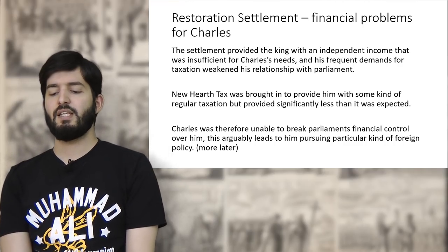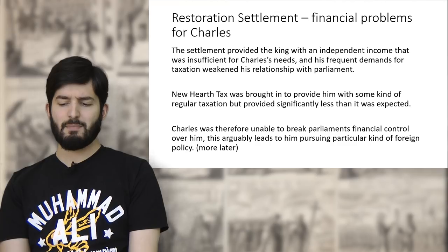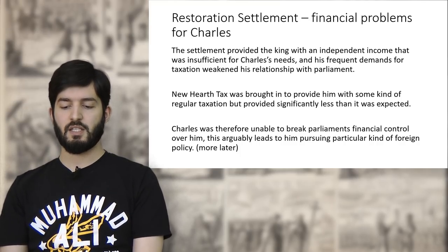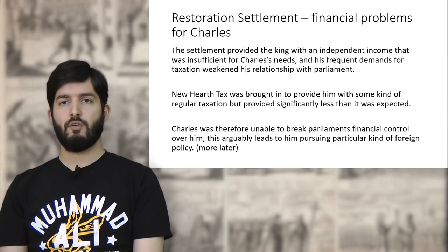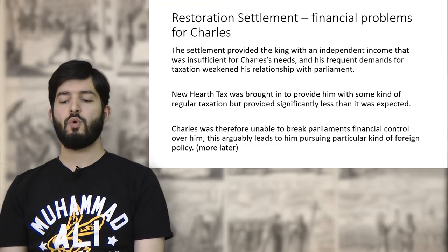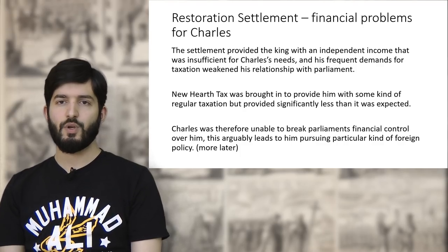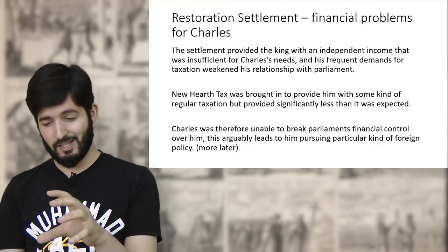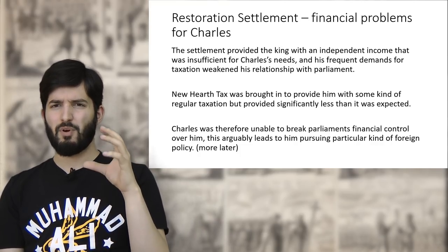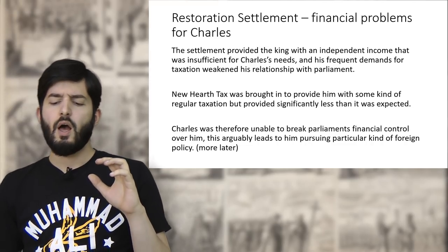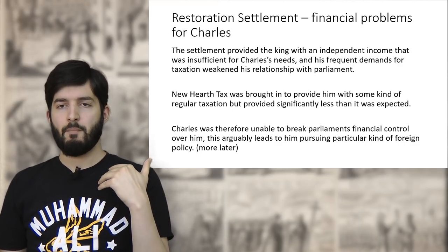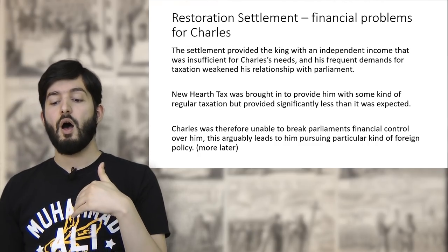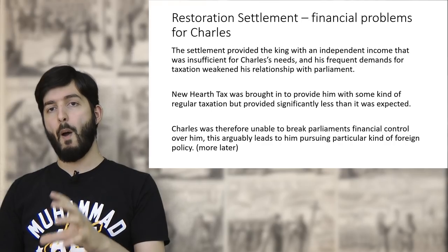The final issue with the Restoration Settlement is the financial problems it creates. The settlement provides the king with an independent income, but the income was not sufficient for Charles's needs. Much like his father, Charles has to constantly return to Parliament to demand taxation, weakening his relationship with them. For example, the hearth tax brought in through the settlement provides significantly less revenue than expected, meaning Charles, like his father, is unable to break Parliament's financial control over him — leading to many of the same issues, particularly in foreign policy.